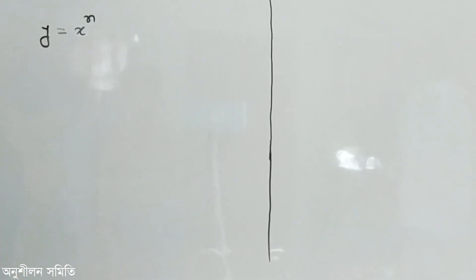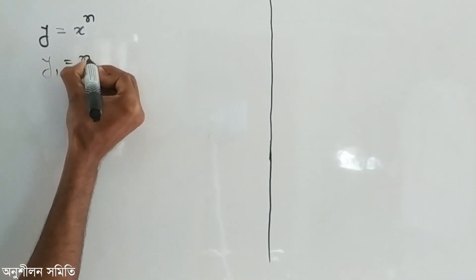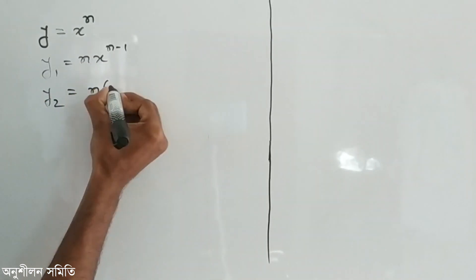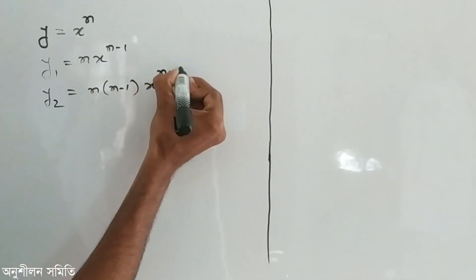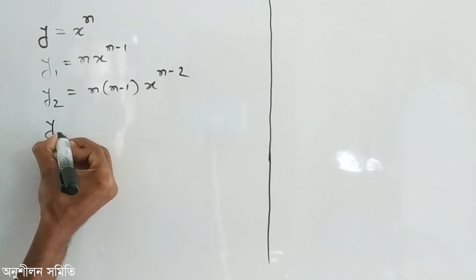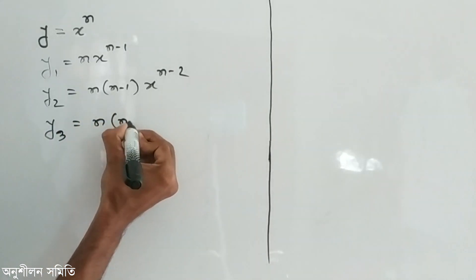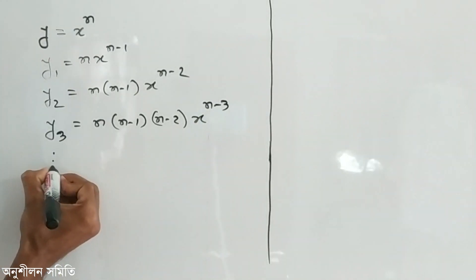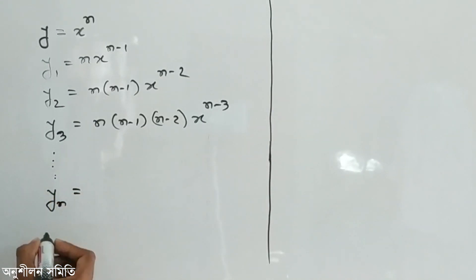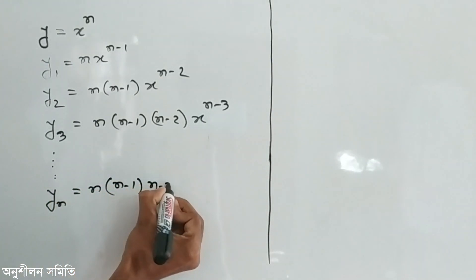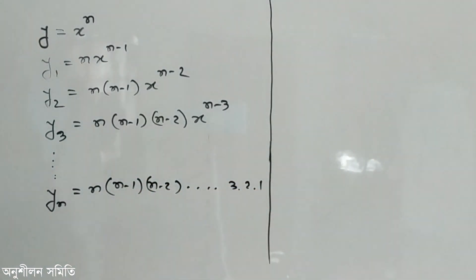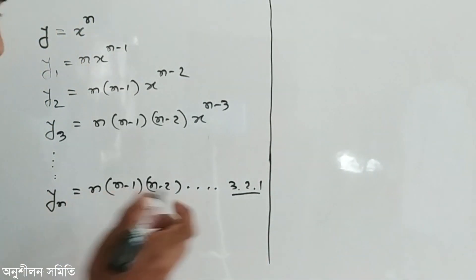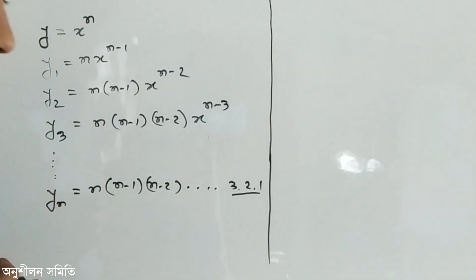Looking at this function, if we enter once and come back, we leave y in this section and then carry out the operation.